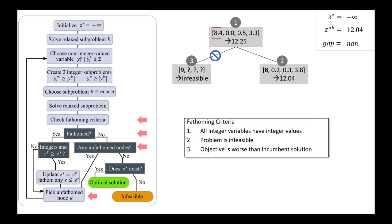There's values in between the integer values now, and so that doesn't qualify. The second criteria is that the problem is infeasible. For subproblem 2, this is a feasible solution.